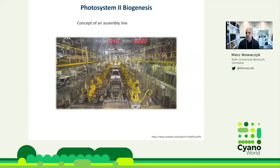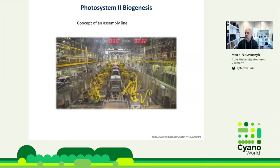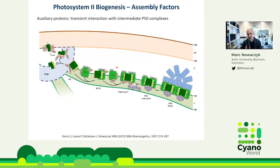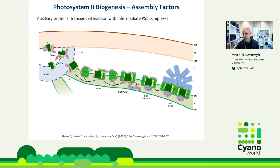What you can also find are proteins called assembly factors — the 'robots' of PS2 assembly — which are involved in this process. There are now actually more assembly factors known than PS2 subunits. We have more than 20 assembly factors now identified by the community, and the number is still growing. Each of these factors is involved in a specific transition at a specific time point in the assembly process of Photosystem II.